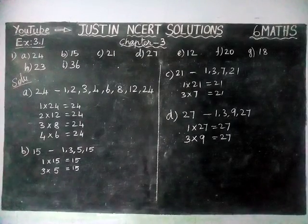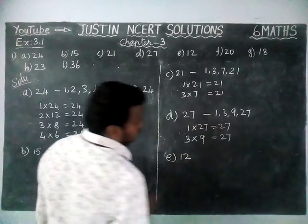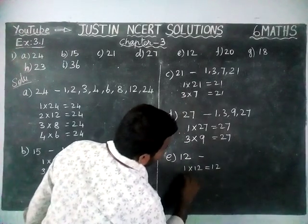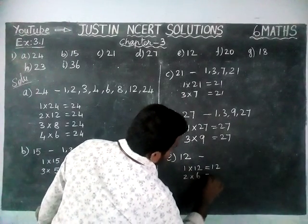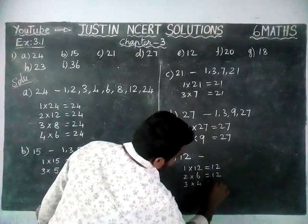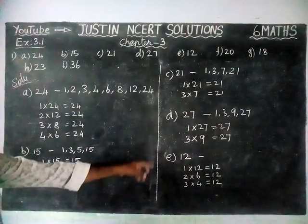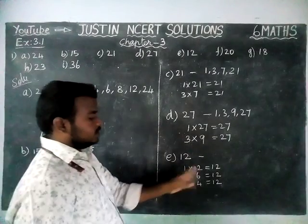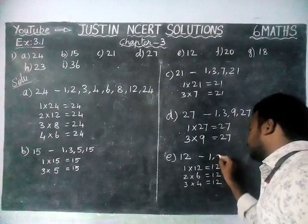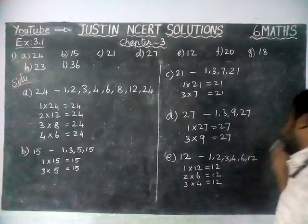Next, option E: 12. 1 into 12 is equal to 12. 2 sixes are 12. 3 fours are 12. 5 will not come; 6 already we have written, so that's all. Factors of 12 are: 1, 2, 3, 4, 6, and 12.